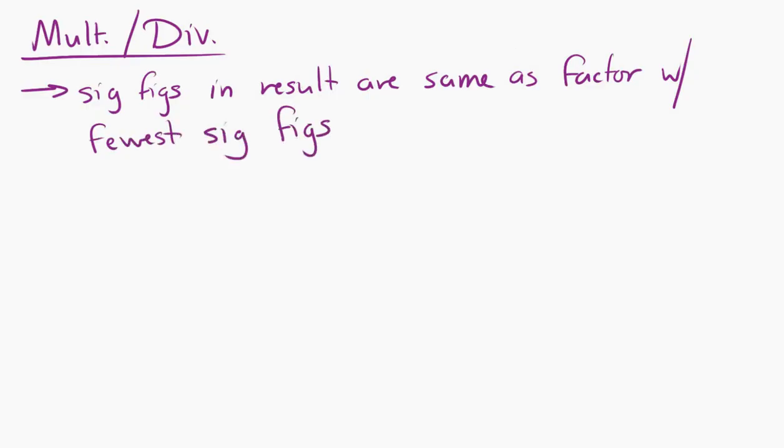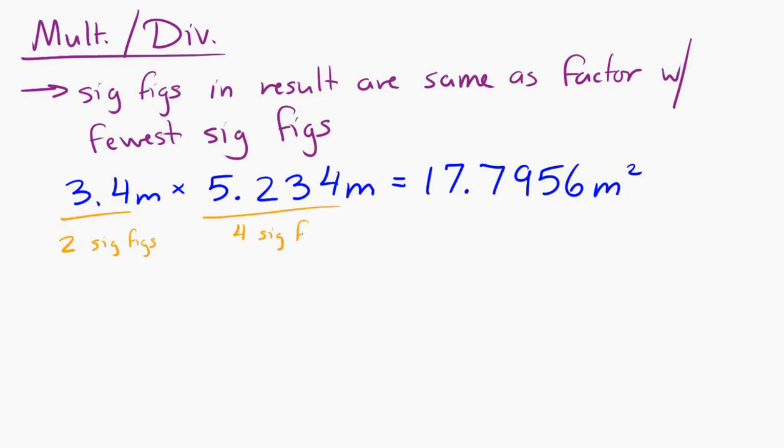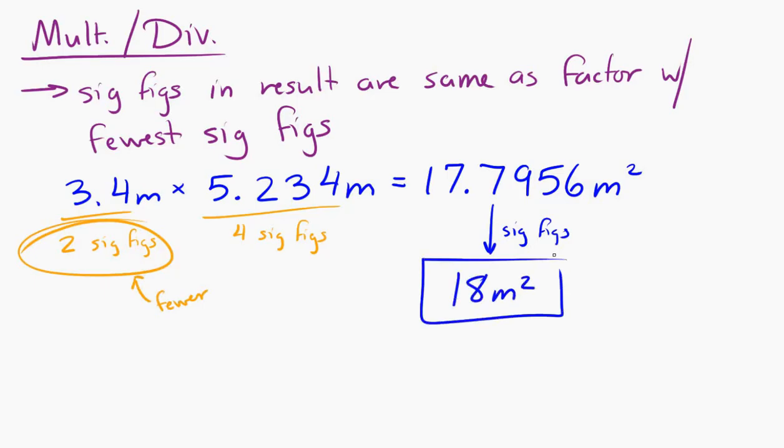So let's say we take 3.4 meters times 5.234 meters. If you put that in your calculator, what you get is 17.7956 square meters. But let's look at those two things that we multiplied together. One of them has two sig figs, and the other has four sig figs. Our answer can only have two sig figs. So when we round it to two sig figs, it's 18 square meters. The other digits we don't know anything about.